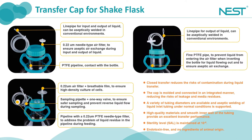Some clients believe that damage may be caused to cells in the tubing if a peristaltic pump is used. For these clients, they can use an inverted liquid transfer cap to let the liquid flow into the next container using gravity without a peristaltic pump. The built-in tube of the inverted liquid transfer cap is very thin and is connected to an air filter to prevent liquid from entering the air filter. The tube is in contact with the flask bottom to ensure that the tube is above the liquid surface after being inverted.